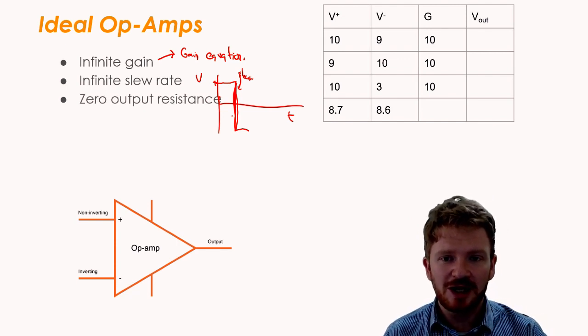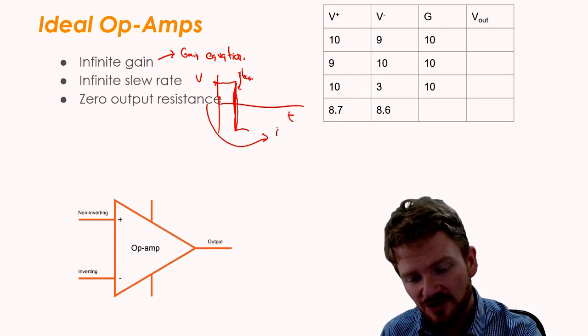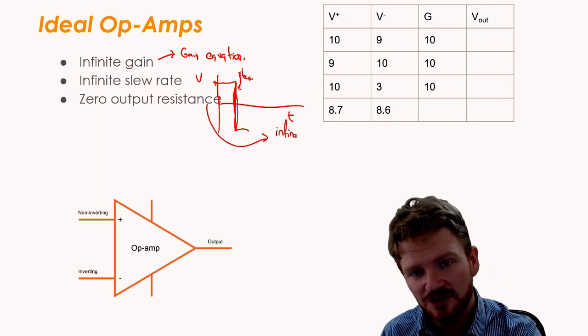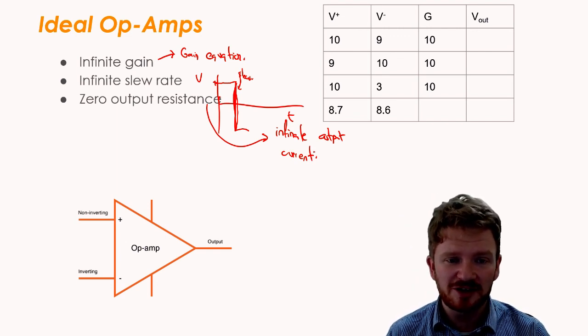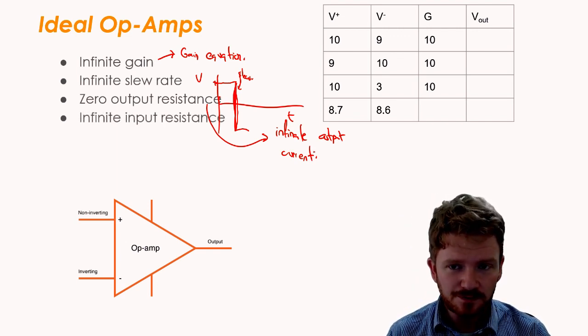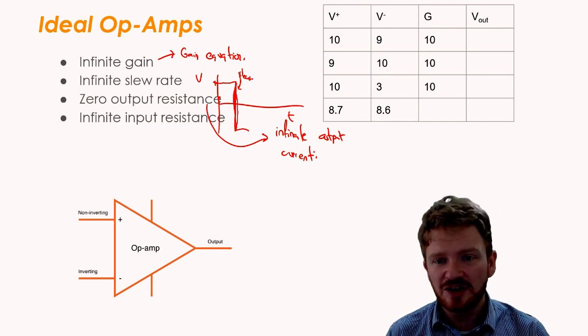We also believe that it has zero output resistance. What that effectively means is it can give an infinite output current. Now, clearly, that's not the case. There will be some input resistance, but in practice, it's normally pretty low.